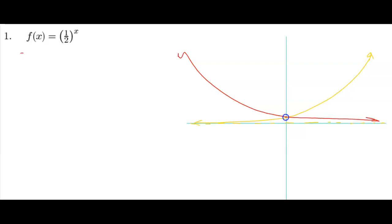Or you could say 1 half is really 2 to the negative 1 power, which means f of x equals 2 to the negative x. So it's the mother function that we have in yellow, but the negative sign on the inside says horizontal reflection. There we go, that's it.